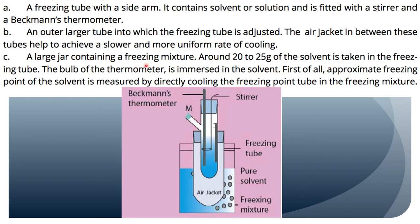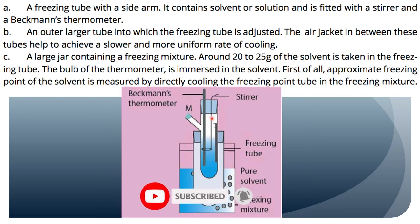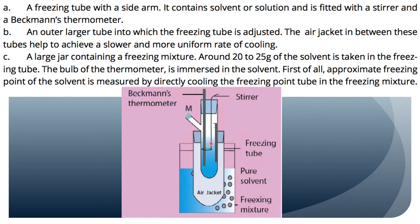The large jar contains the freezing mixture. What we do is take 20 to 25 grams of solvent in the freezing tube. We measure 20 to 25 grams of solvent on the weighing balance.